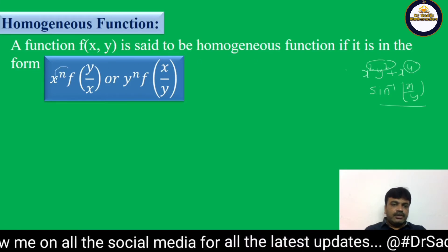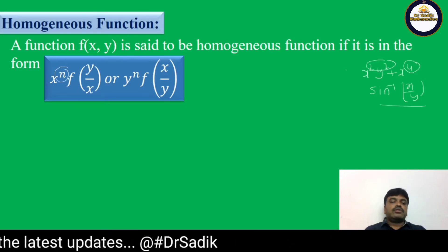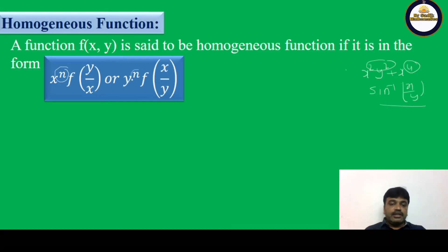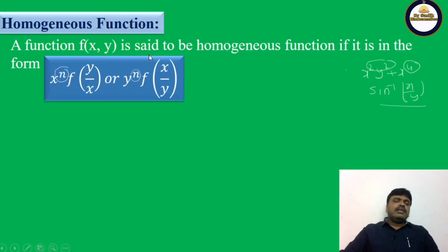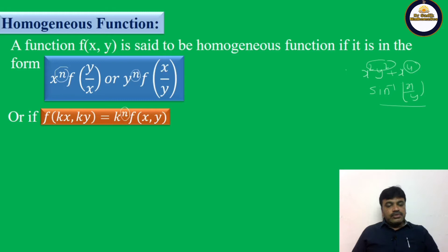There is another form of the definition: f(kx, ky) = kⁿ·f(x,y). If this holds, then the degree is n, and f is called a homogeneous function of degree n. This second definition is also very useful.